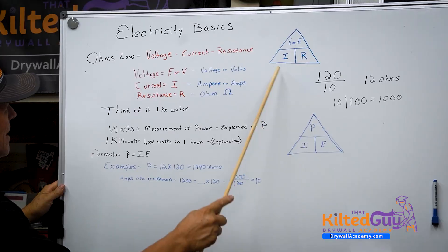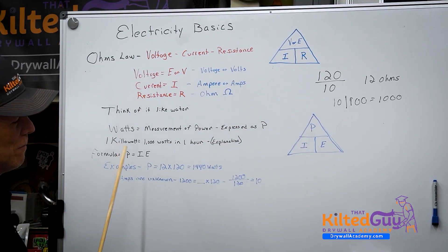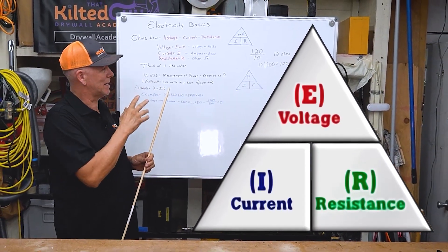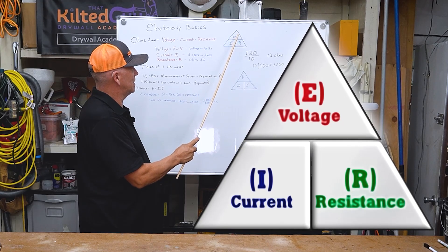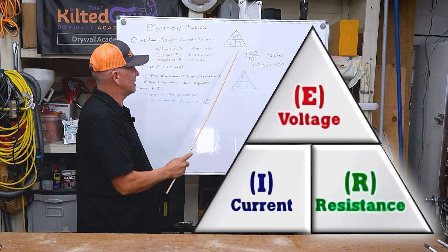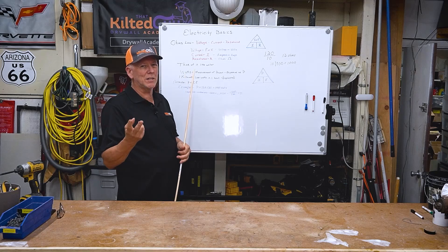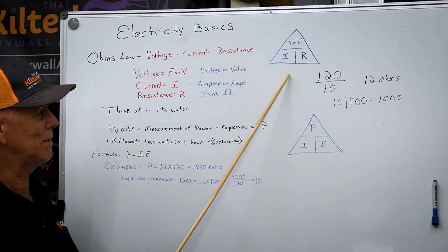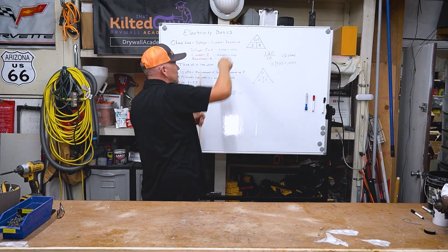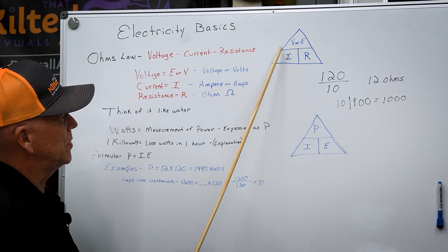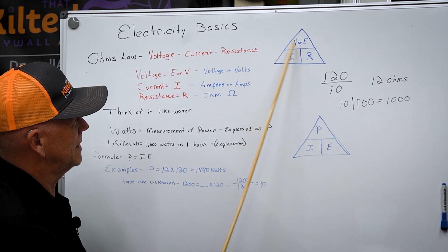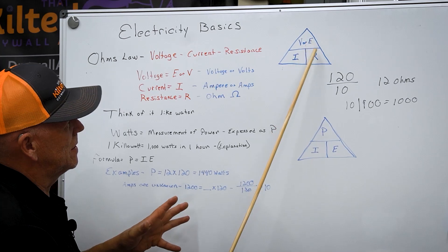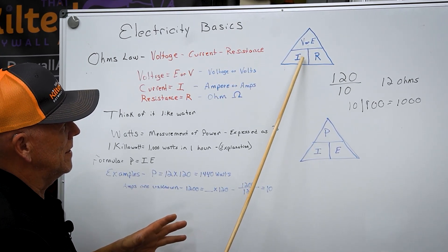Let's go over here to this triangle and explain what that means. There's three components to electricity, and in this case it's the voltage, the amperage, and the resistance. If you know any two of those, you can calculate the third using this formula.